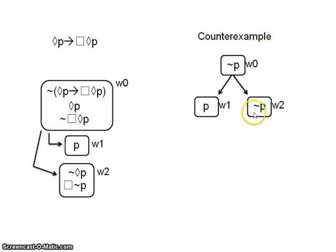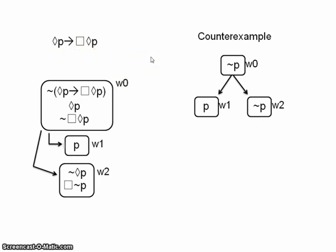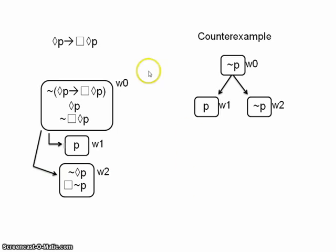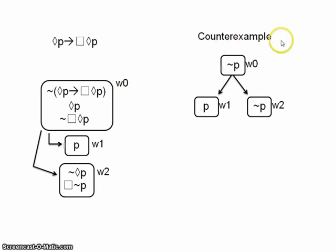Does this counterexample actually work? We can see that possibly P is true because P is in w1, and w1 is accessible from w0. So possibly P is true — that part of our conditional is true. What about necessarily possibly P? Something is necessarily true in a world just in case it's true in all accessible worlds. Is possibly P true in all accessible worlds? No — in w2 we can see its negation appears. So necessarily possibly P is not true in w0. That gives us a true antecedent and a false consequent, so our conditional is false, and this counterexample works perfectly.